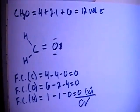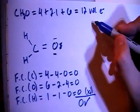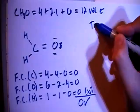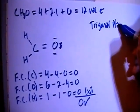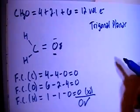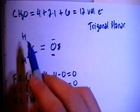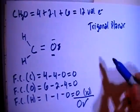So that's good. Now in terms of shape, this is going to be a trigonal planar shape. There's a central atom with 3 peripheral atoms. Trigonal planar.